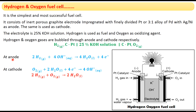At the anode, oxidation occurs: 2H₂ + 4OH⁻ → 4H₂O + 4e⁻. The hydrogen gas is passed and OH⁻ ions from the electrolyte are consumed, forming 4 water molecules and 4 electrons. The electrons produced at the anode flow through the load and reach the cathode, where reduction occurs.